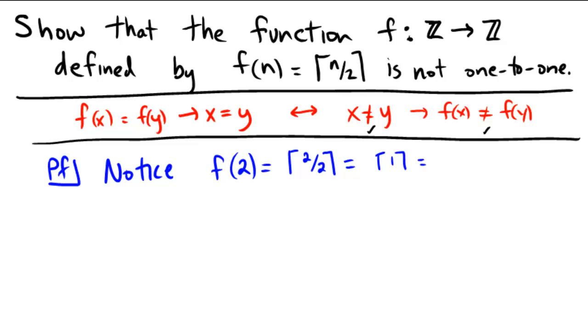What is the smallest integer that is bigger than or equal to 1? That would be the number that we know of as 1. So f of 2 is equal to the number 1, because 2 over 2 is 1, and 1 is already an integer, so it's the smallest integer that's bigger than or equal to itself.